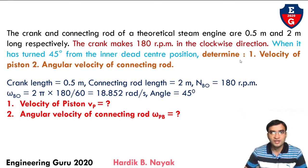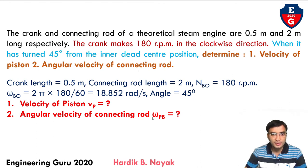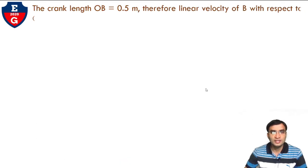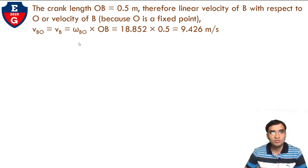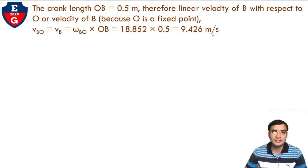We need to determine: first, the velocity of the piston VP; second, the angular velocity of the connecting rod omega_PB. Since OB = 0.5 m, the linear velocity of B with respect to O is VBO = VB = omega_BO × OB = 18.852 × 0.5 = 9.426 m/s.